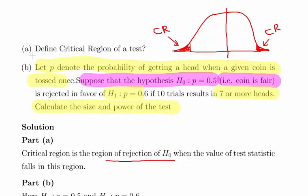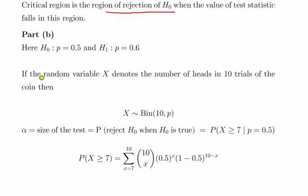So essentially the size and the power of the test. Here first off just to remark that the null hypothesis and alternative hypothesis are p equals 0.5 and p equals 0.6 respectively. So just state out explicitly that what we are dealing with here is a binomial random variable. If X is the random variable, if the random variable X denotes the number of heads in 10 trials of the coin.